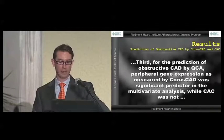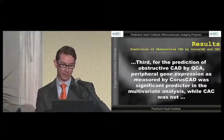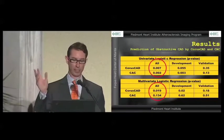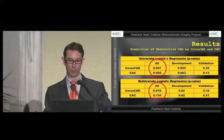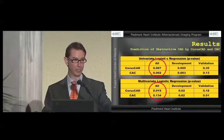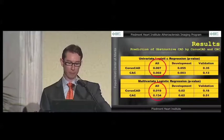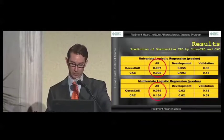Thirdly, for the prediction of obstructive CAD by QCA, the Chorus-Cat score was a significant predictor in the multivariate analysis, while the calcium score was not. When we looked at the Chorus-Cat score and calcium scoring in a univariate fashion, both tests significantly predicted the presence of obstructive coronary disease as defined by QCA. When we put these into a multivariate model, Chorus-Cat did retain statistical significance, whereas the calcium score did not in this patient cohort.